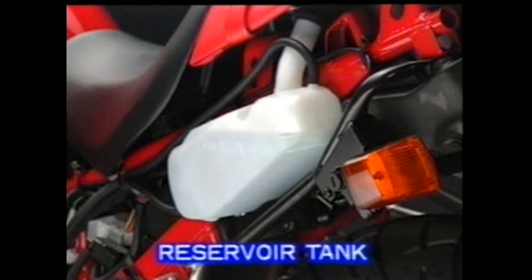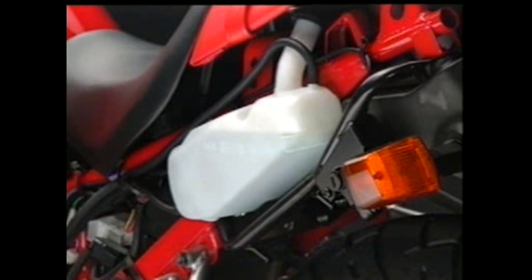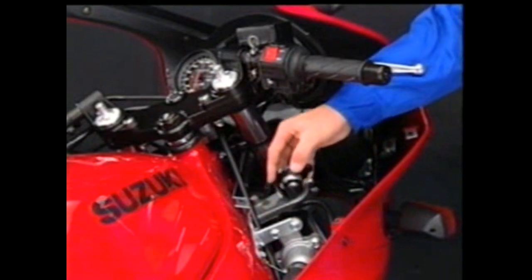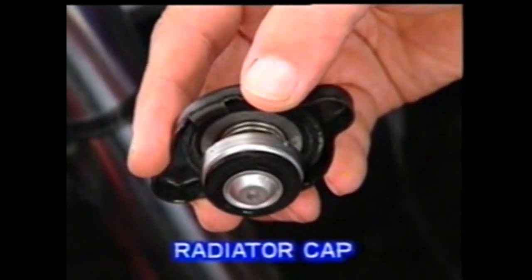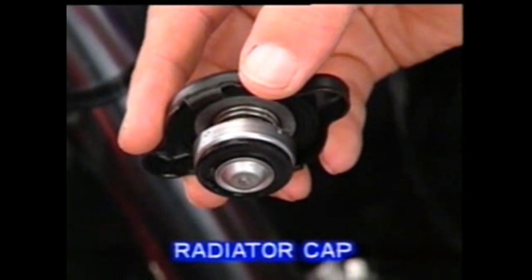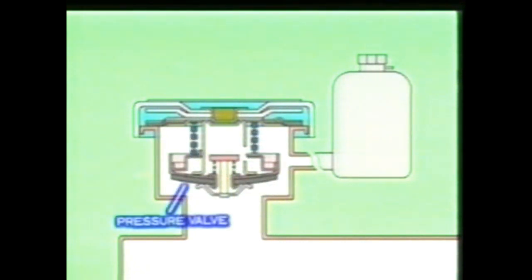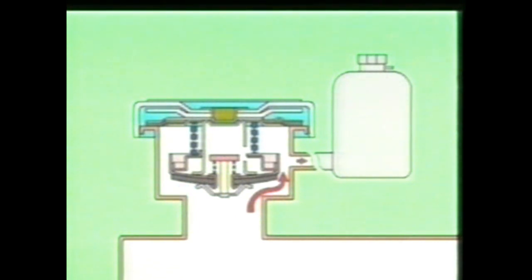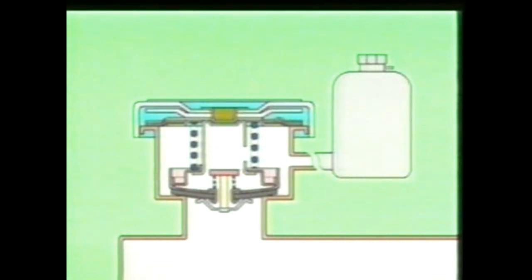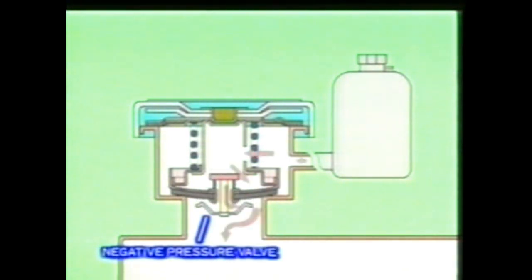Conventional water cooling systems are also equipped with a reservoir tank which is sealed and pressurized, to aid in adjusting the pressure of the coolant within the system. The pressure is adjusted with the pressure and negative pressure valves in the radiator cap. When the coolant temperature rises and a pressure of 0.9 kg per cubic centimeter above atmospheric pressure is created, the pressure valve opens and the expanded coolant flows into the reservoir tank. When the temperature of the coolant lowers, the coolant contracts, the pressure within the radiator cap becomes less than atmospheric pressure, the negative pressure valve opens, and the coolant in the reservoir tank flows back into the radiator.